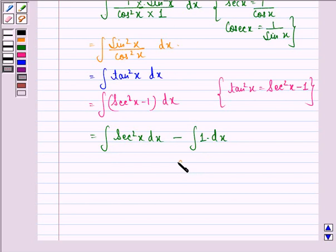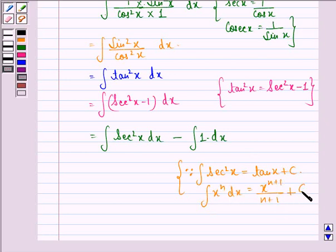Now we know that the integral of sec²x is equal to tan x plus C. And we know that the integral of x^n dx equals x^(n+1)/(n+1) plus a constant C, where n is not equal to -1. So using these two, we can say that this equals tan x minus x plus C.